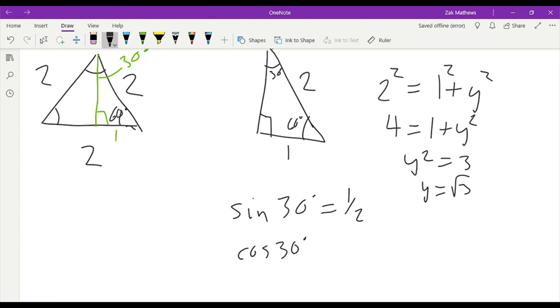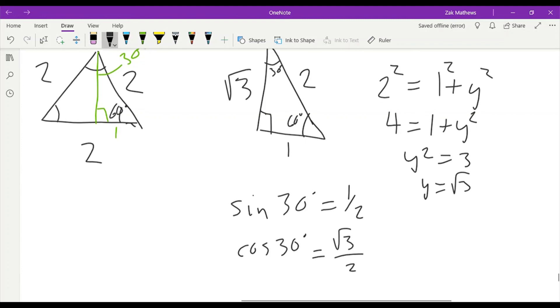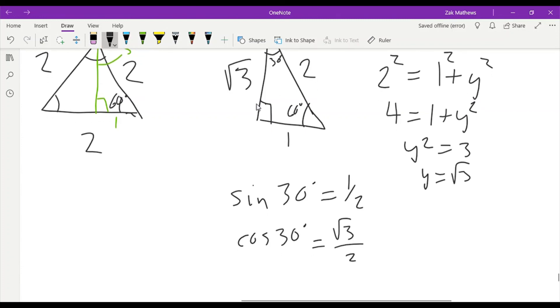Then tangent would be the opposite over the adjacent. So we would get the one over the root three, which we can rationalize by multiplying root three over root three. And we get root three over three. And so that gives us another set of exact values.